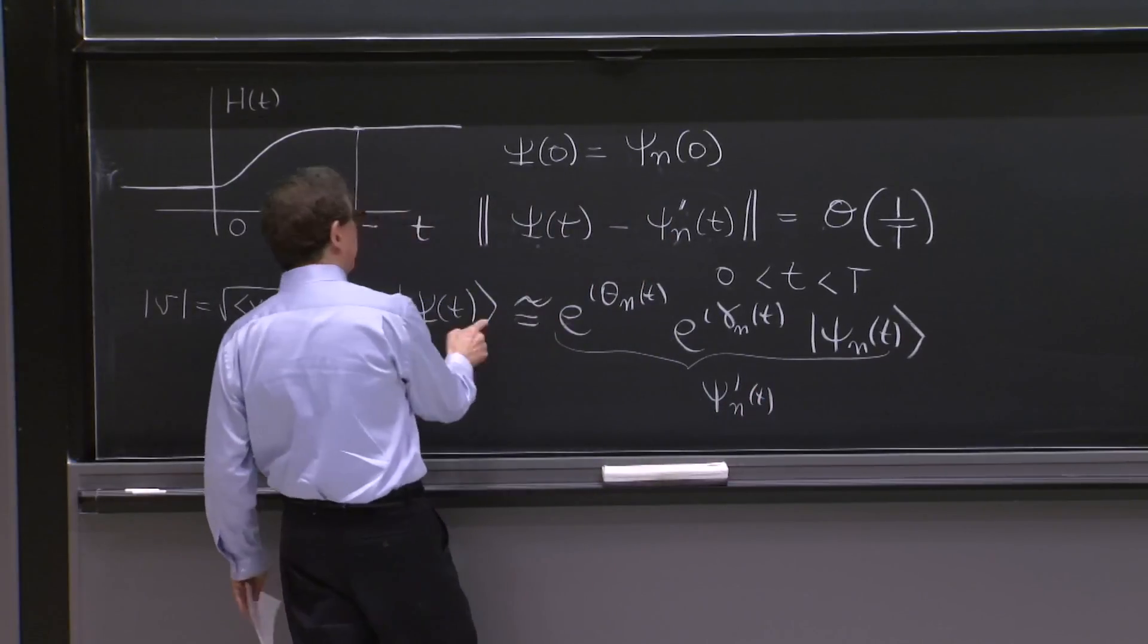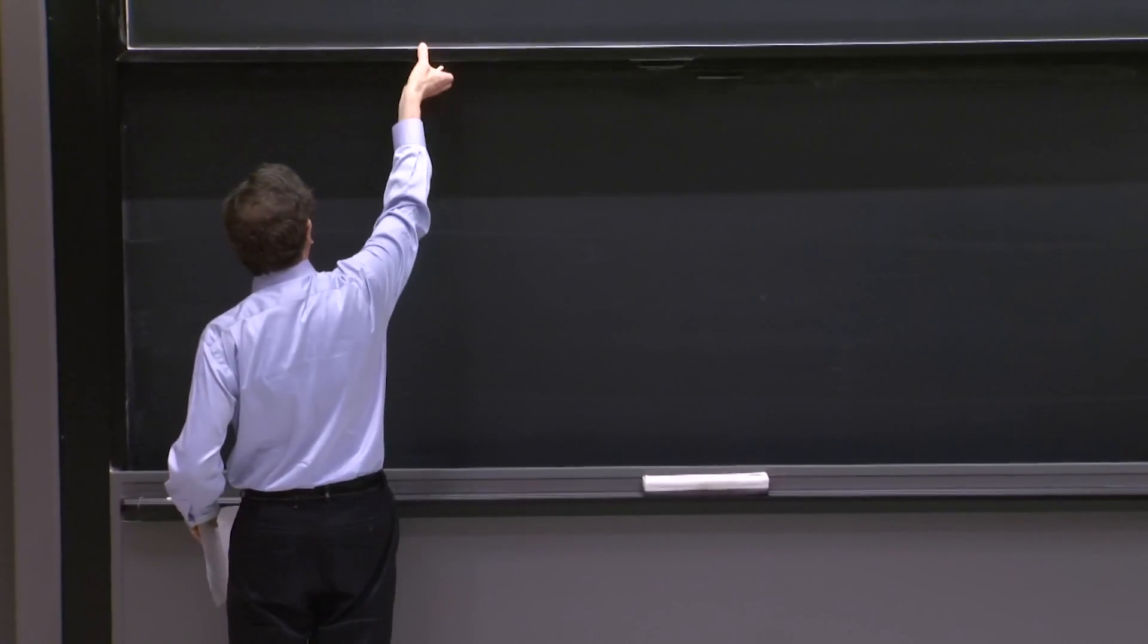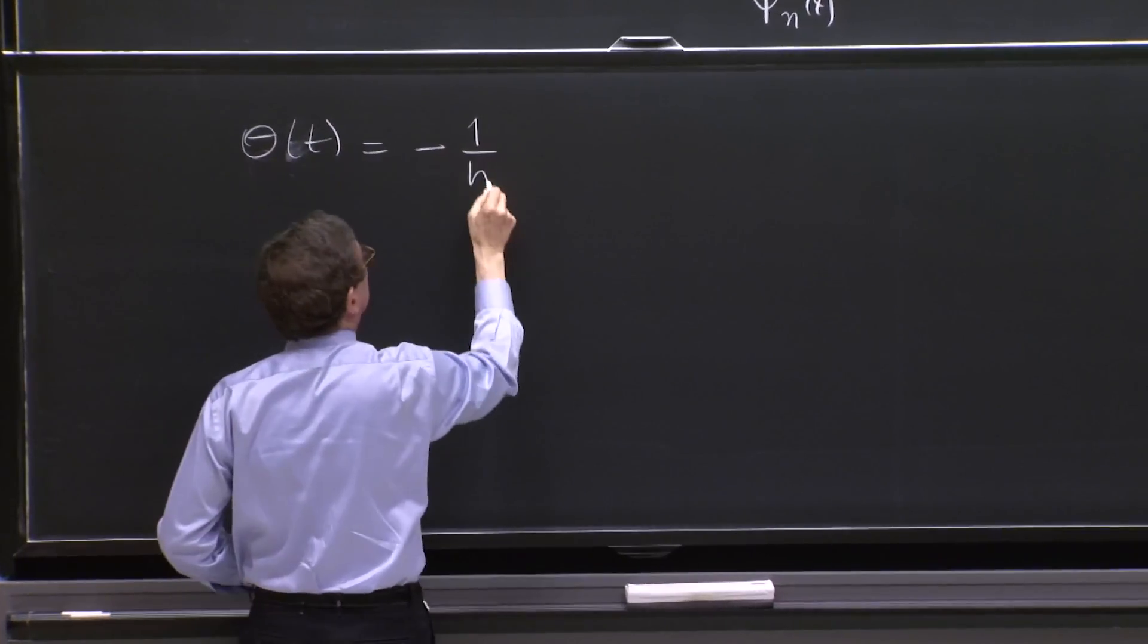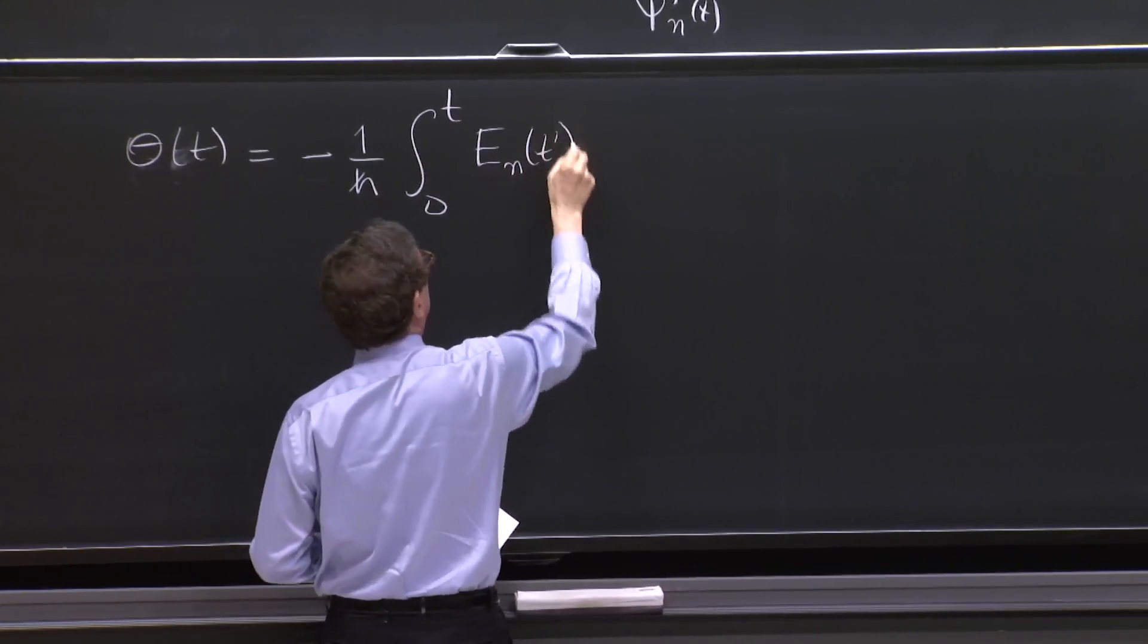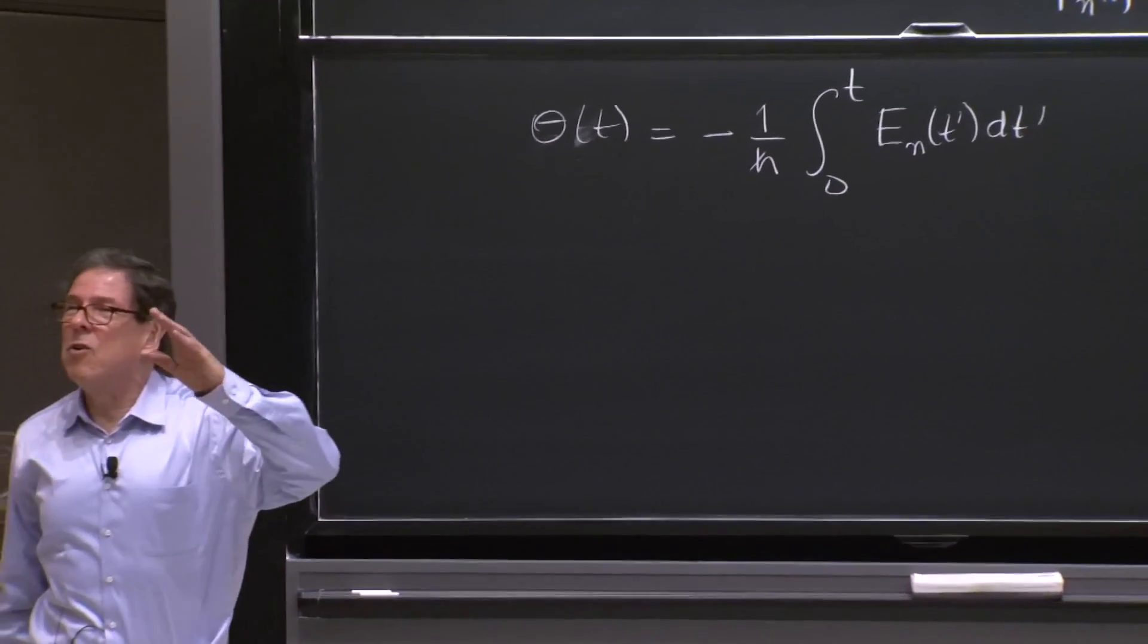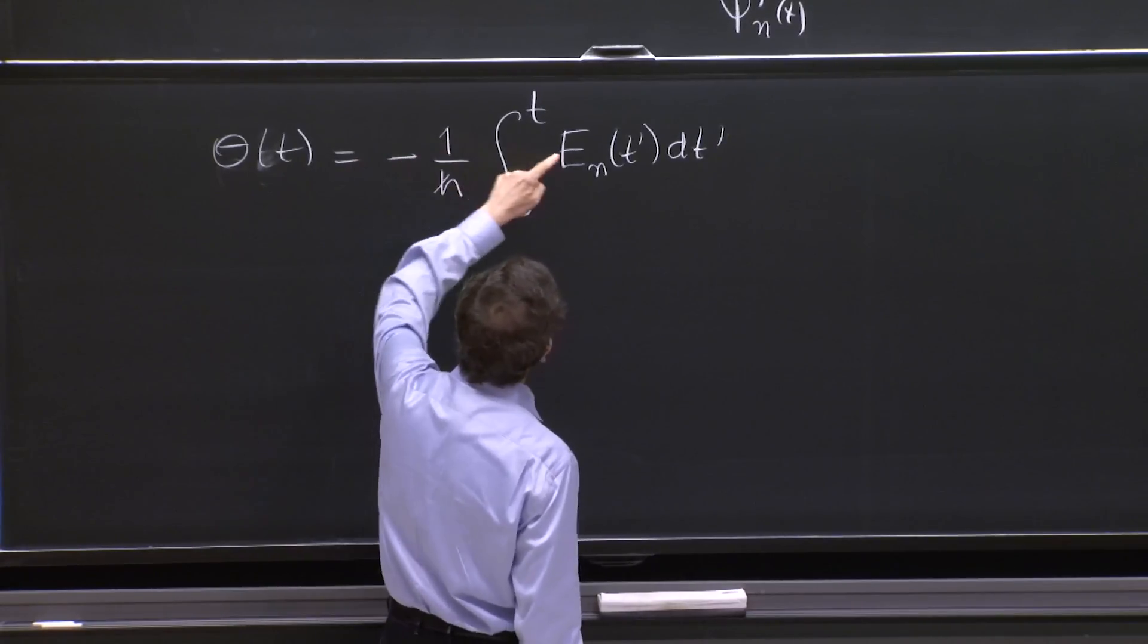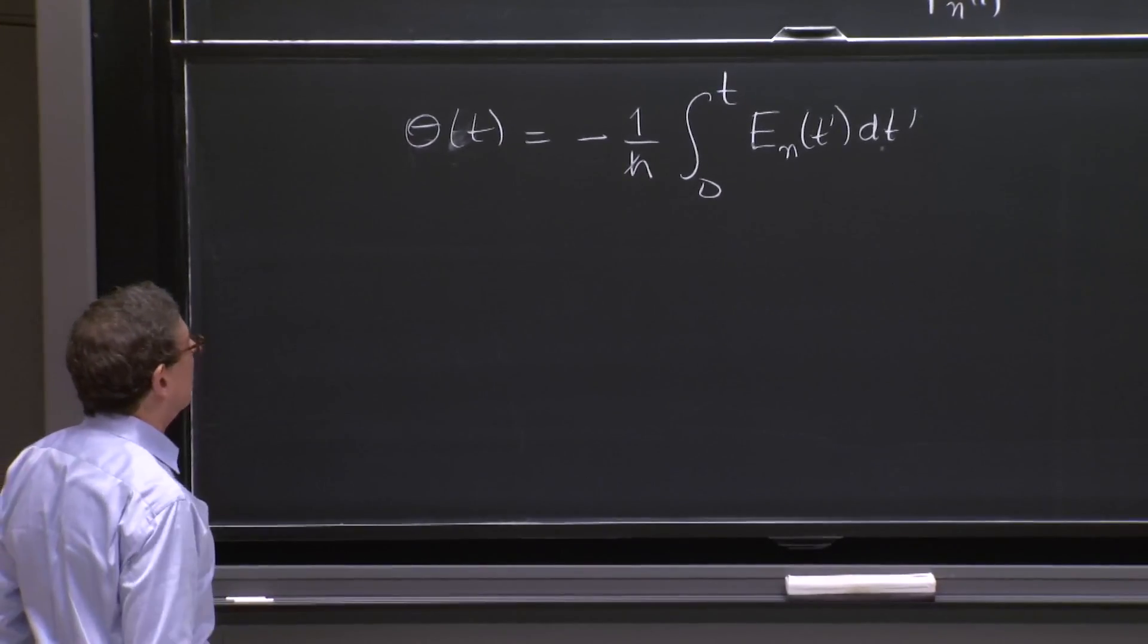And in this statement, this is what I would call the psi n prime of t. And that's why the real state is just approximately equal to that one. And we have these phases in which theta of t is minus 1 over h bar integral from 0 to t, e n of t prime dt prime. That is kind of a familiar phase. If you had a normal energy eigenstate, time independent one, this would be e to the minus e times t over h bar with an i would be the familiar phase that you put to an energy eigenstate.